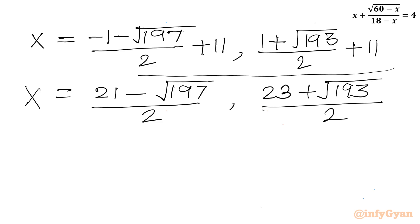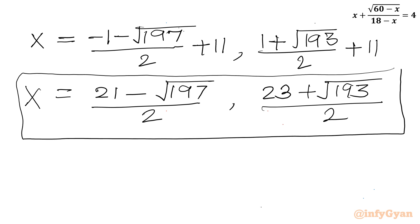The final real solutions are x equals (21 minus √197)/2 and x equals (23 plus √193)/2. I hope you liked this video. Thank you so much for watching — don't forget to like, share, and subscribe. Bye-bye, take care, goodbye!